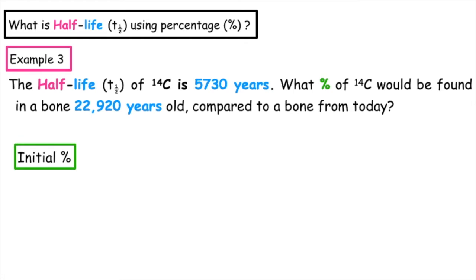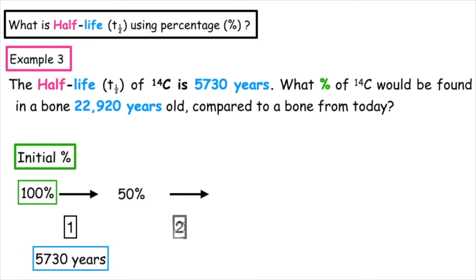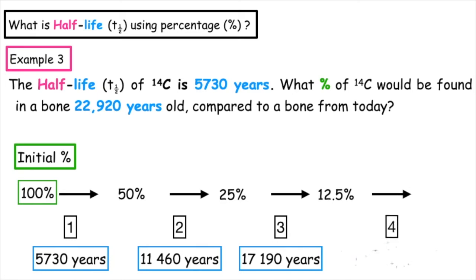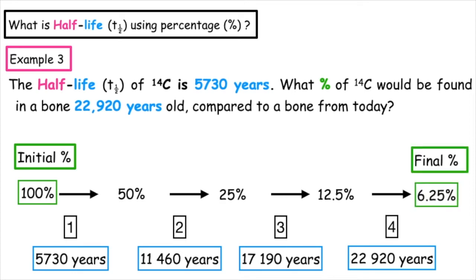So we know that we're working in percentage and we have our initial percentage, which is 100%. If it undergoes one half-life, that's a total of 5,730 years, which would give us 50%. If it underwent a second half-life, that would give us 25%. If it underwent a third half-life, it would give us 12.5%. And if it underwent a fourth half-life, which would give us a total of 22,920 years, the final percentage is 6.25%.